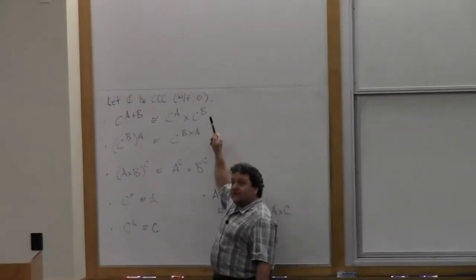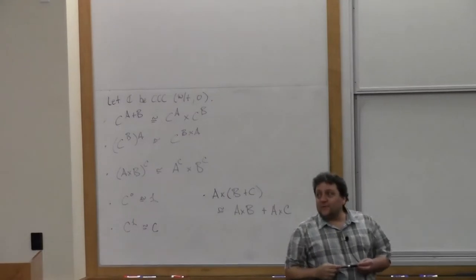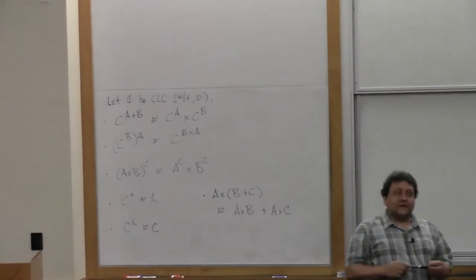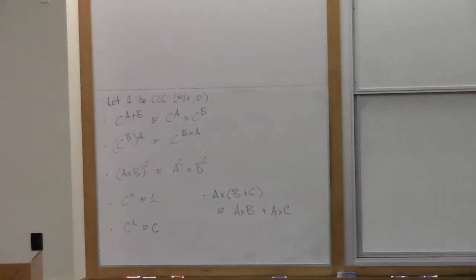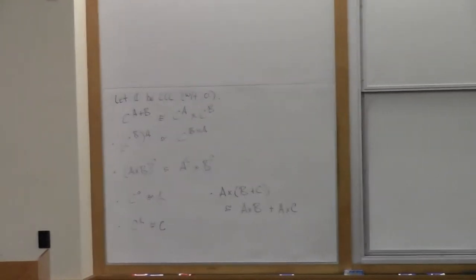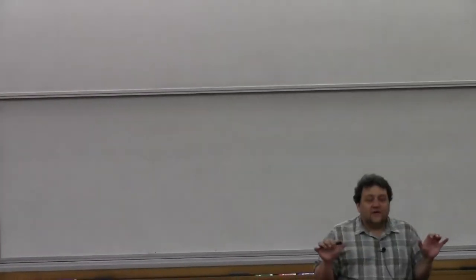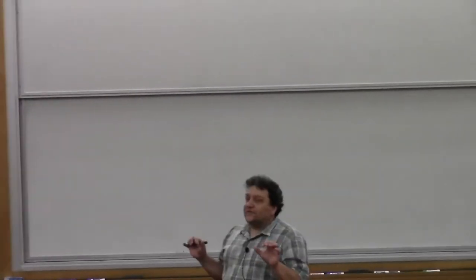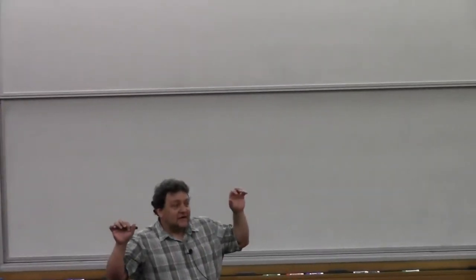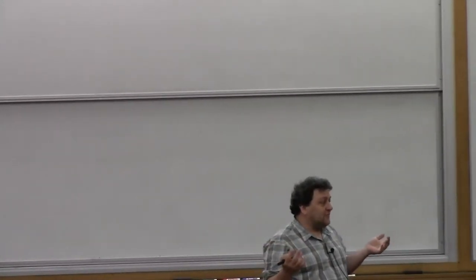Did anyone succeed? Yeah. Okay. So there were a couple of different ways of doing it. One was — as in the first exercise where you were proving associativity of products — you find some universal mapping property that both of these things have.